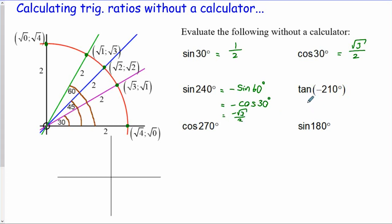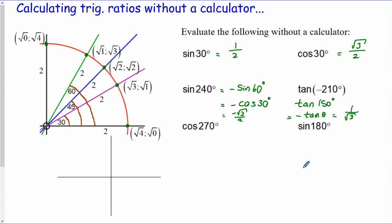Tan of negative 210: you might want to add 360 to that first to get tan of 150. Tan of 150 - we're in quadrant 2, off the horizontal axis by 30 degrees. So this is going to be negative tan of 30. Remember tan is your y value divided by your x value, so at 30 degrees that's 1 over root 3.